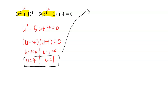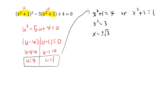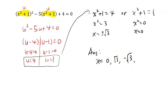This means that x squared plus 1 equals 4, because u is x squared plus 1, or x squared plus 1 equals 1. You have to figure out what the value of x is for each case. For the first one, you subtract 1 from both sides, and when you take the square root, remember you need plus or minus, so you have two answers. For the other, x squared equals 0, so x equals 0. That gives you three solutions: x equals 0, square root of 3, and negative square root of 3.